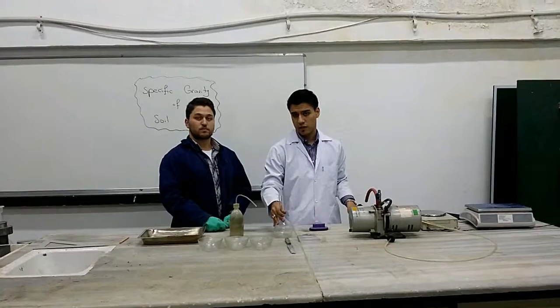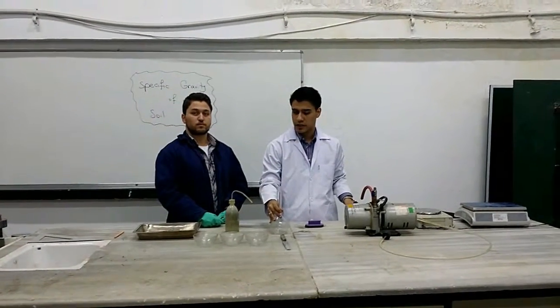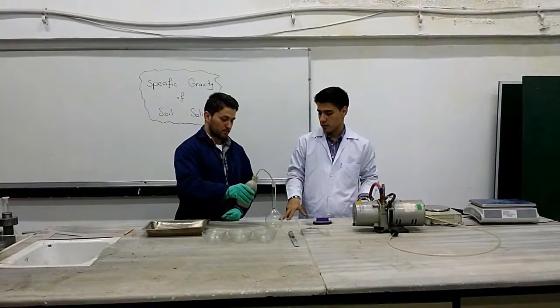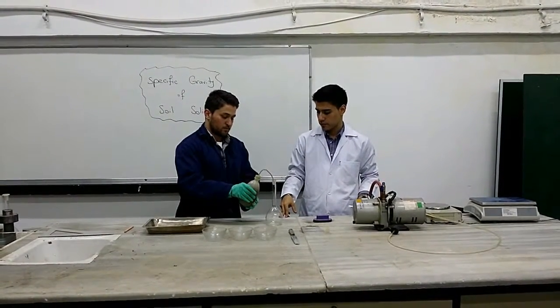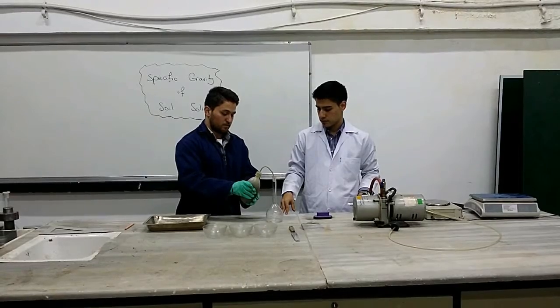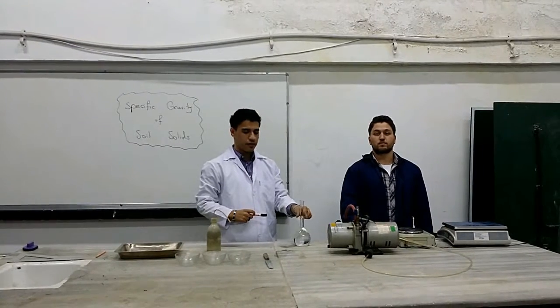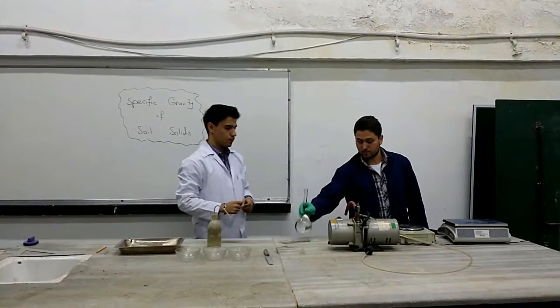First, we need to clean the volumetric flask, which we already did. Then, we fill the volumetric flask of 500 ml with distilled water. Next, we determine the mass of the flask filled with water.